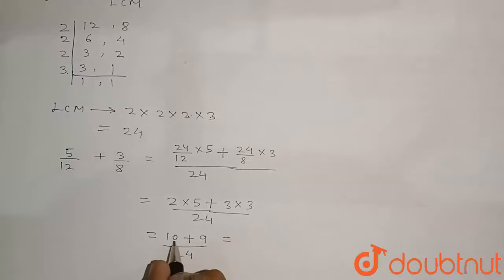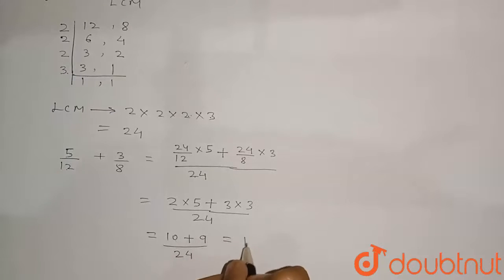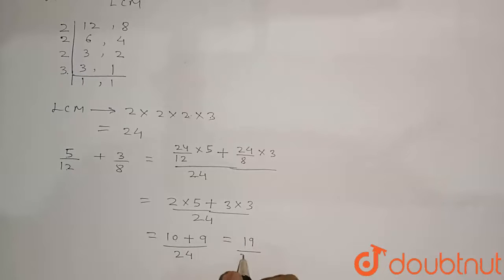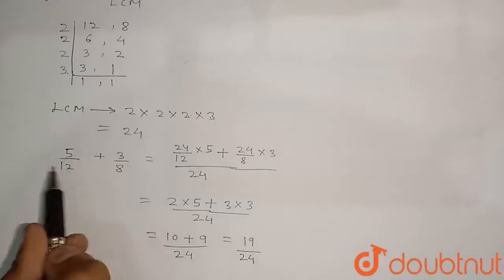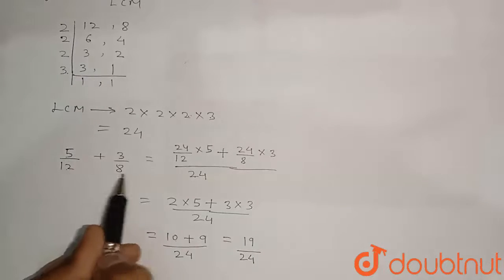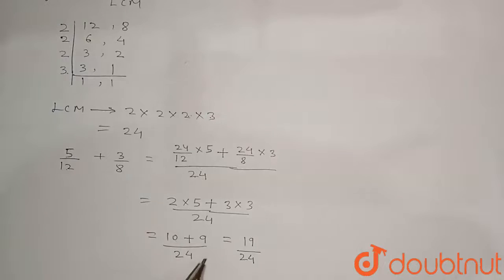Further simplifying: 10 + 9 = 19, with denominator 24. So the answer for the addition of 5/12 and 3/8 is equal to 19/24.